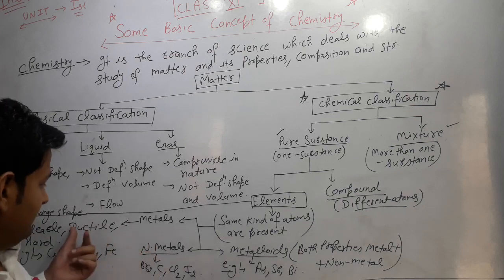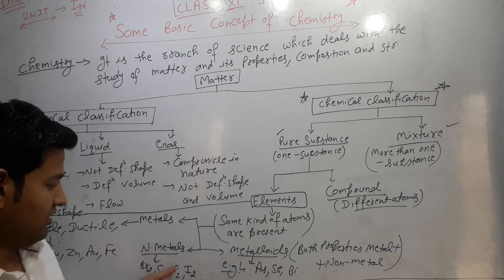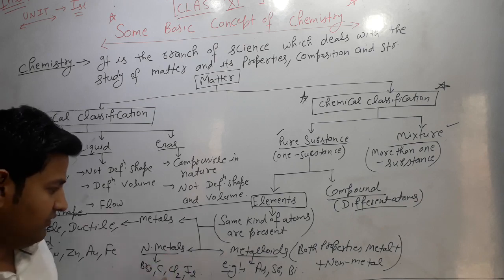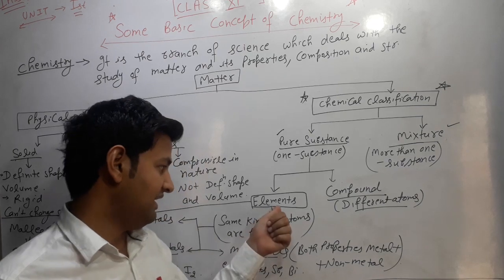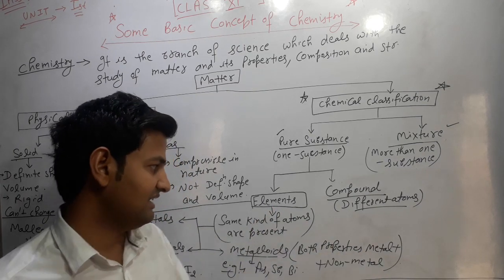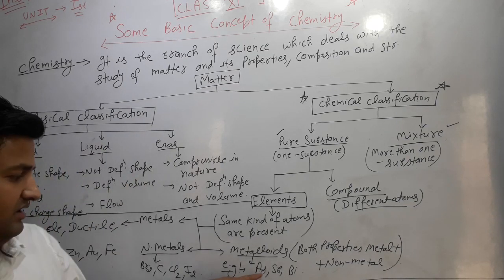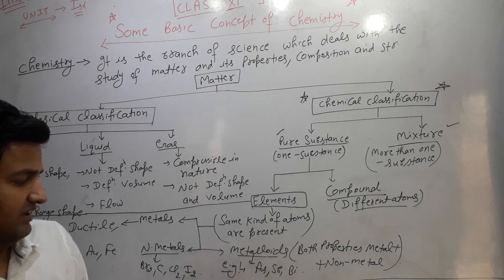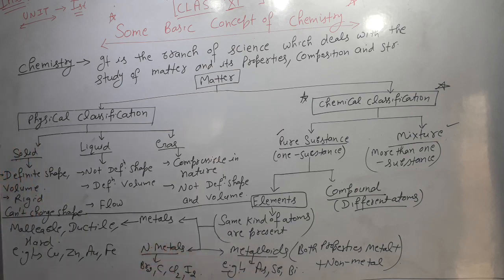Non-metals have properties different from metals. Examples of non-metals are bromine, carbon, chlorine and iodine. Metalloids are those elements which show properties of both metals as well as non-metals. Examples of metalloids are bismuth, antimony and arsenic.